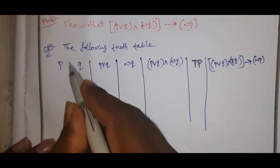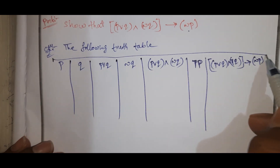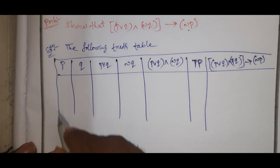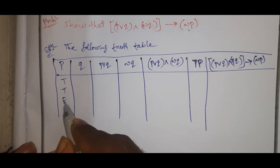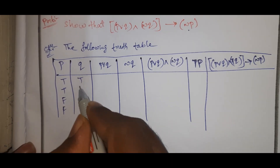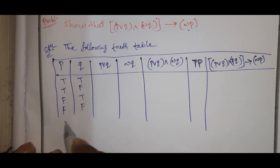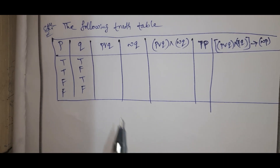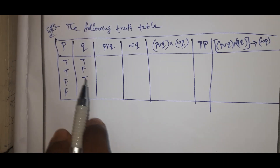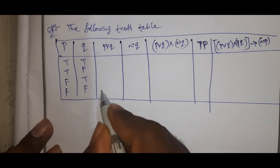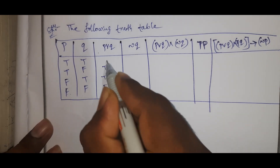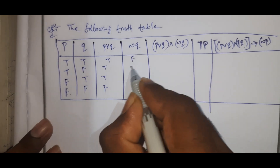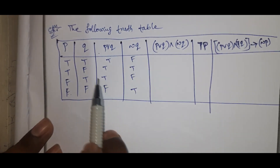We have four statements and two propositions. The P column is: true, true, false, false. The Q column is: true, false, true, false. For P AND Q: any two statements true gives true, remaining gives false. The negation Q column is: false, true, false, true.